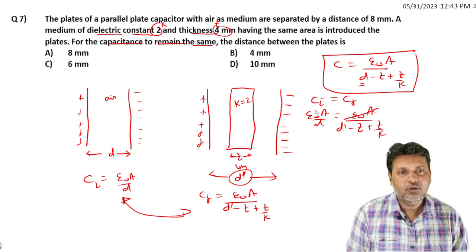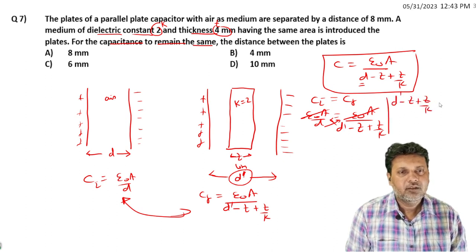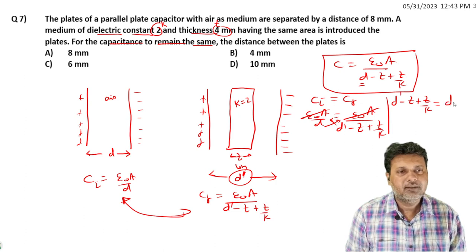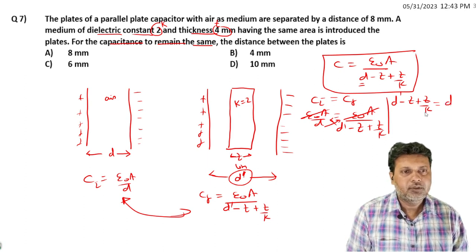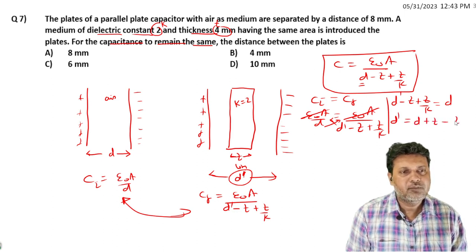Epsilon not A cancels. Cross multiply: D dash times (D minus T plus T by K) equals D. Therefore, D dash equals D plus T minus T by K. Correct.